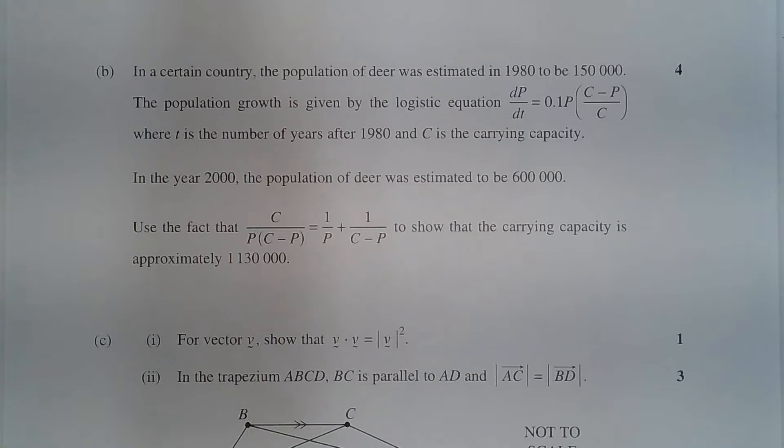Question 14b. In a certain country, the population of deer was estimated in 1980 to be 150,000. The population growth is given by the logistic equation dp/dt equals 0.1p multiplied by (c minus p) over c, where t is the number of years after 1980 and c is the carrying capacity.